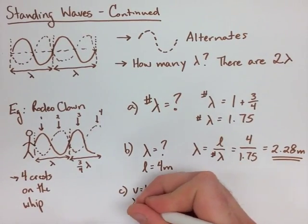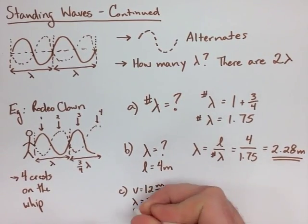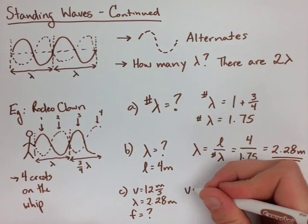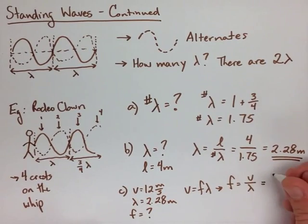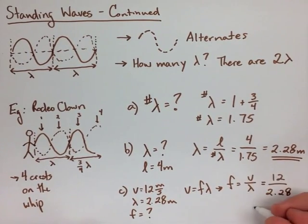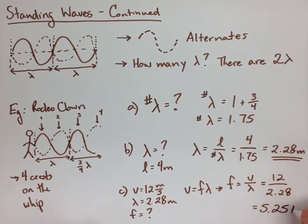For frequency, we use our universal wave equation of V equals F lambda. We rearrange it for F equals V over lambda, and we substitute our numbers in, which are 12 divided by 2.8, and we get 5.25 hertz.